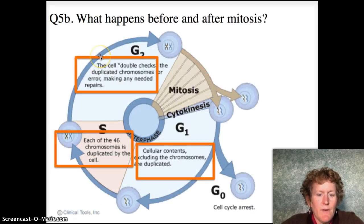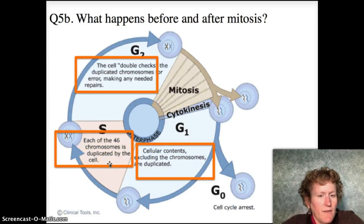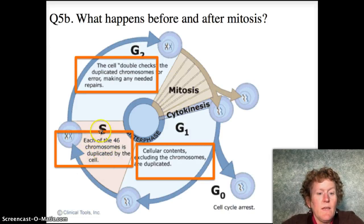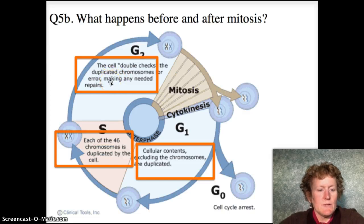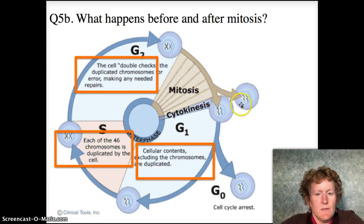The second part of question five is what happens before and after mitosis. Before mitosis, that's interphase — all the cell contents, everything, have to get duplicated or replicated. The chromosomes are replicated, all of the organelles are copied, and the cell double-checks the duplicated chromosomes for errors and makes sure organelles are functioning properly. Then it undergoes mitosis through the PMAT stages, followed by cytokinesis, producing two new cells, and the cycle starts all over again.